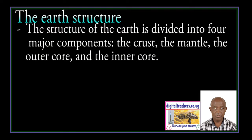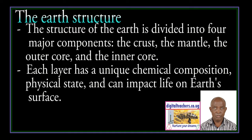The structure of the earth is divided into four major components: the crust, the mantle, the outer core, and the inner core. Each layer has its own chemical composition and physical state, and can impact life on the surface.